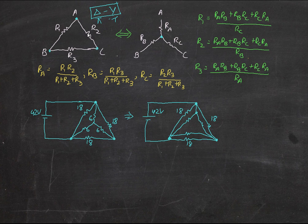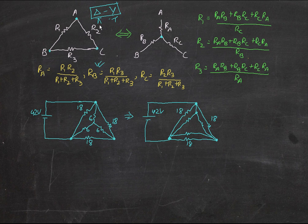First we need to know the formula for conversion. If you want to convert from Delta to Y — the inverted Y form of circuit — then the formula to use is the one drawn in yellow. For finding Ra, you use R1 times R2 divided by the sum of all resistors. For finding Rb, you use R1 times R3 divided by the sum of all resistors. For Rc, you use R2 times R3 divided by the sum of all resistors.